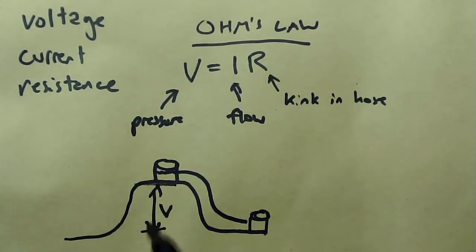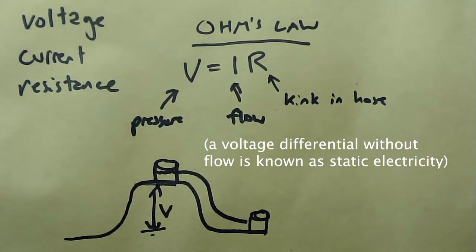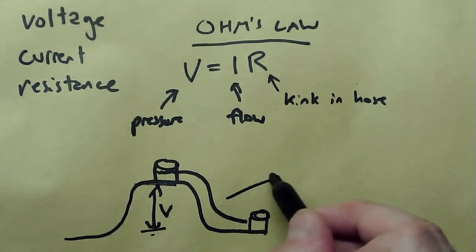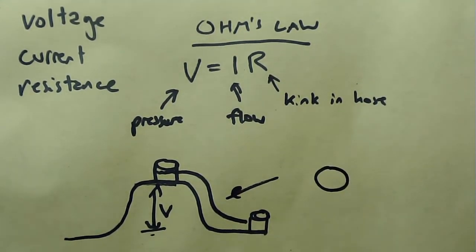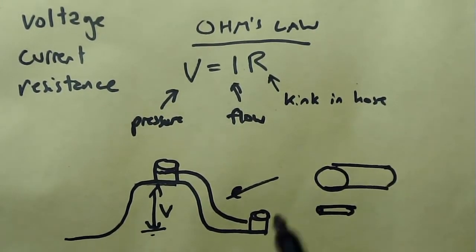Now, our voltage is not going to lead to any flow if there is no connection between these two bodies of water. The nature of that connection, the nature of this hose, we can think of as the diameter of the hose. We have a pipe of a certain diameter, we could have a smaller one, or a larger one.